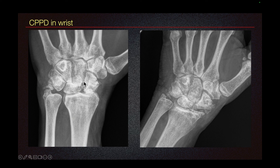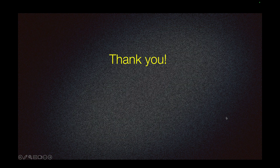On the left, we do see an example of radiocarpal arthritis. On the image on the right, we also see other areas of chondrocalcinosis. That's all for CPPD.